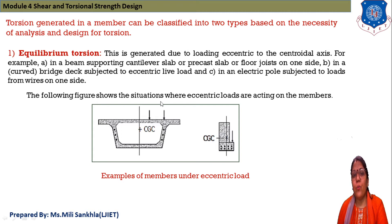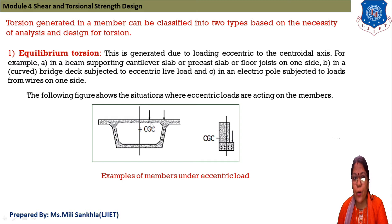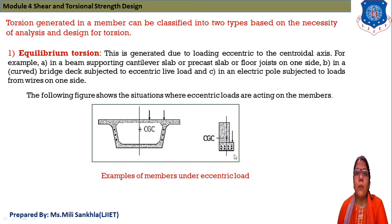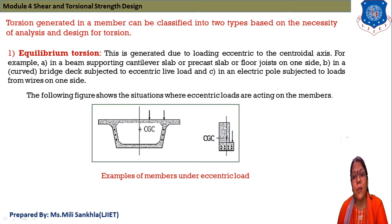The following figures show situations where eccentric loads are acting on the member. This one is a box-type girder where the CGC, that means centre of gravity of concrete, and load are shown — the load is not provided at the centre and acts as an eccentric load. This is an L-section where the load is provided from one side, making it eccentric. CGC means centre of concrete.